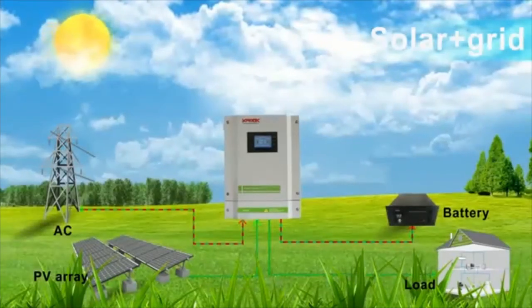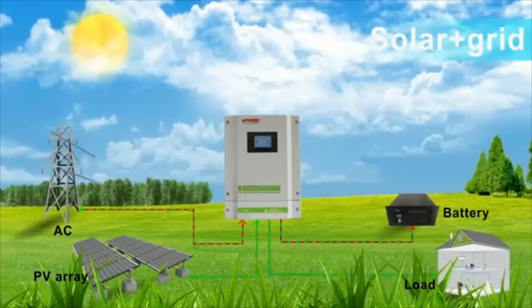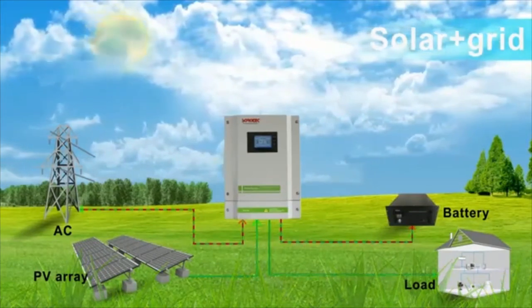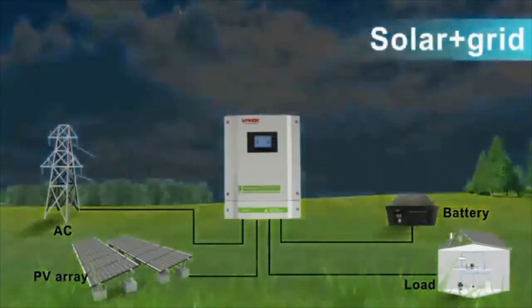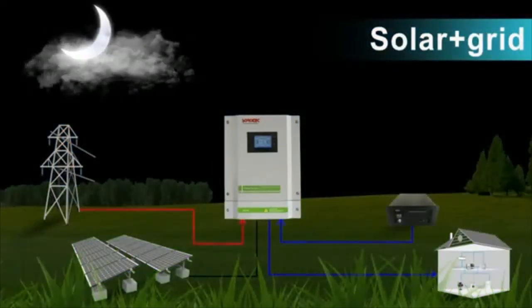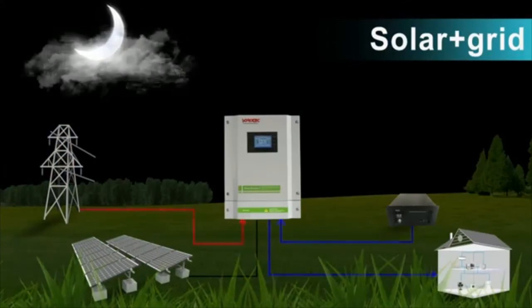Mode 5: Solar energy first. When solar energy exceeds load energy, the excess energy is sent to the grid. When solar energy is insufficient, the remaining energy is provided by utility.